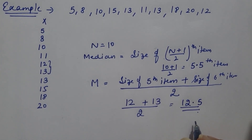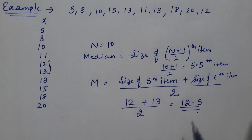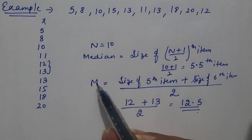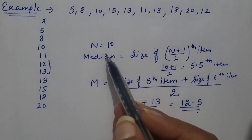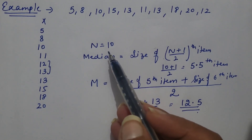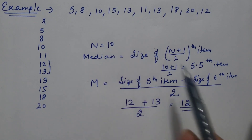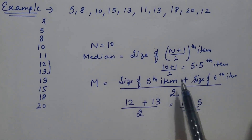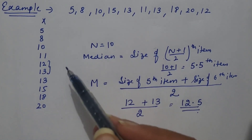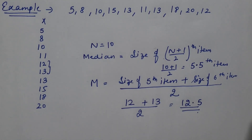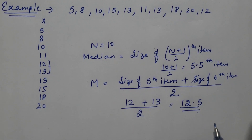In individual series, this is the way to calculate median. If the number of observations N is odd, it can be calculated easily. But if N is even, then we have to take the average of the two middle items. So this is how we calculate median in individual series.